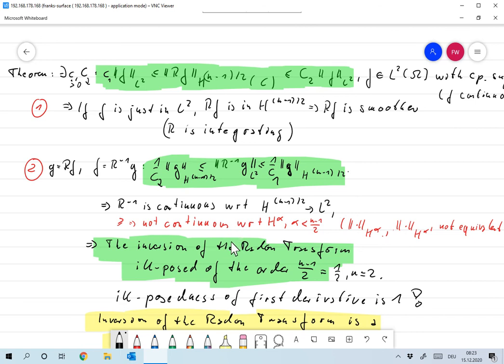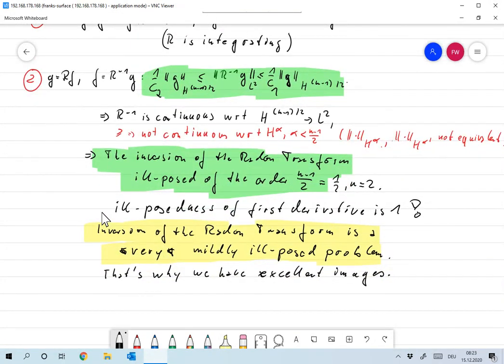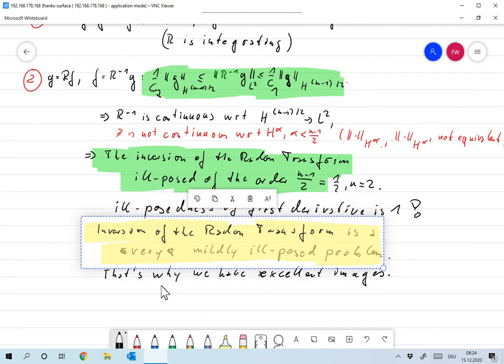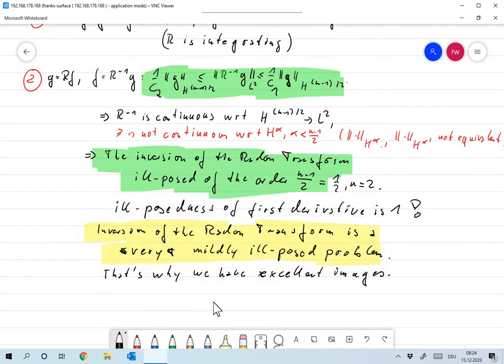Of course we're always looking at the case n equals 2, so we are interested in the two-dimensional case. So in R^2 we get an ill-posedness of one half, which is better than the ill-posedness of the first derivative which is one. So it's in a way simpler to invert the Radon transform than to take the derivative of a function, and that means that the inversion of the Radon transform is a very mildly ill-posed problem. And that's the reason why we have so excellent images in computerized tomography. I will stop here and prove everything in the next video.